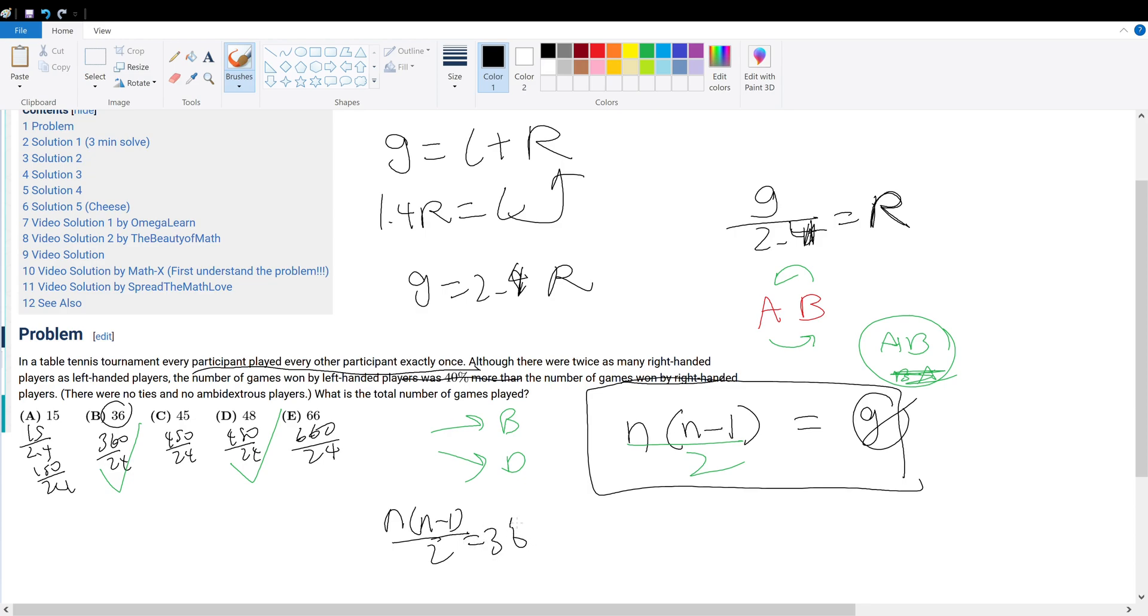Is there a number that satisfies this equation? This is n times n minus 1 equals 72. 72 is 8 times 9. This works, right? Because if we set n equal to 9, 9 times 9 minus 1, which is 8, equals 72. So it satisfies this equation. So our answer is answer choice B.